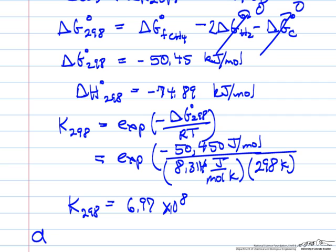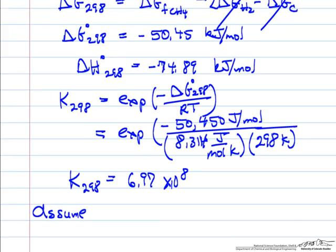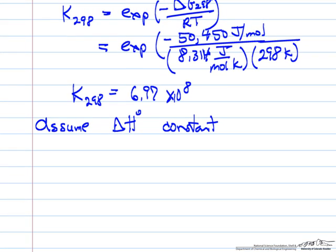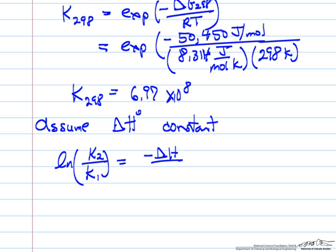Now we're going to make an assumption which may not be valid over this large a temperature range, but gives us a first approximation. Let's assume that delta H, the heat of reaction, is constant and doesn't change with temperature. If we make that assumption, then we can relate the equilibrium constant at two temperatures — in this case 298K and 644 degrees centigrade — by the heat of reaction and the absolute temperatures.